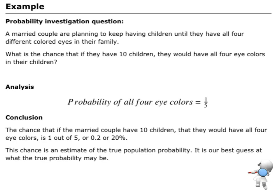Here's an example. If we're looking at the investigation question where the couple are going to keep having children until they have all four different colored eyes in their family, what's the chance they're going to have all five? We run our simulation, make our spreadsheet, get our results—do that 50-odd times—and come up with an estimate of the probability of one-fifth. So there's a one-fifth probability that if they have 10 children, they would get all four eye colors.